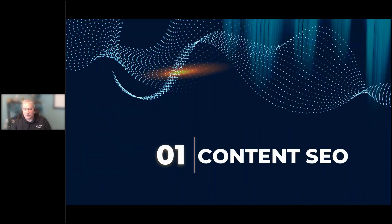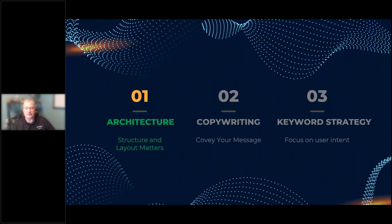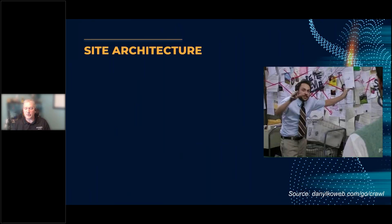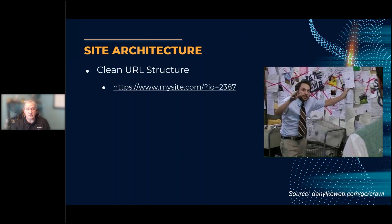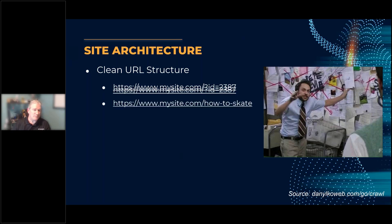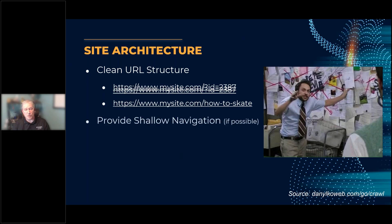Let's get started with content SEO, which we can break into three categories: architecture, copywriting, and keyword strategy. Site architecture matters a lot. Your URLs have to be short, descriptive, and contain keywords. Most users remember URLs when they're catchy — almost like human language, not numerical or cryptic strings. It's a lot easier to say 'how to skate' and people remember it. You also want to provide shallow navigation, ideally one or two clicks to the destination.